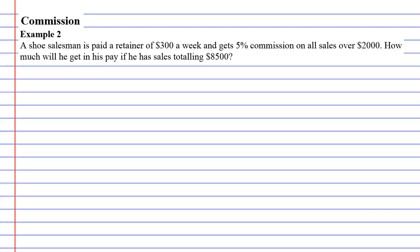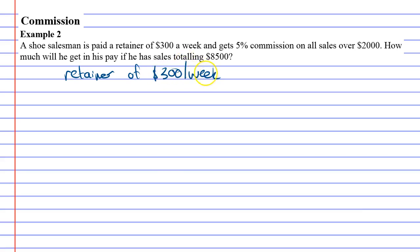We're on to example 2 for commission. This time we have a shoe salesman who gets a retainer of $300 a week. A retainer is just a very small income that's there to help you in case you don't get any sales.